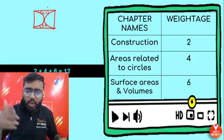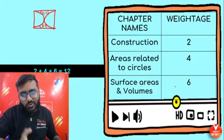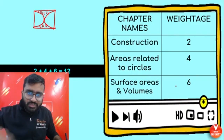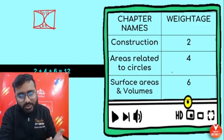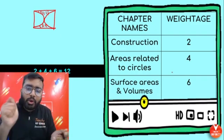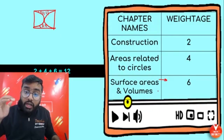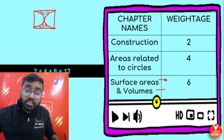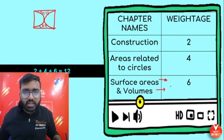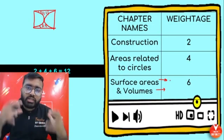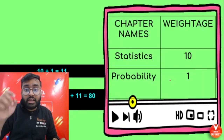Surface Areas and Volumes: the course has been reduced, so frustum is removed. Some basic concepts can be asked. Most probably one simple question will come, and one calculation-heavy question involving the combination of solids or combination of figures. This is important — keep it in mind.